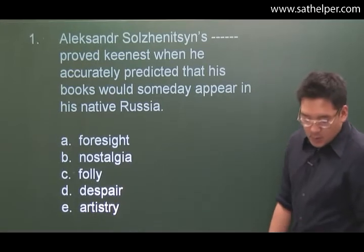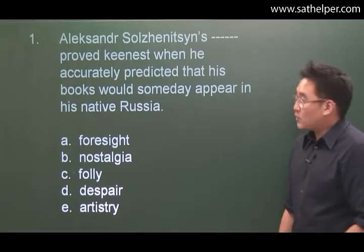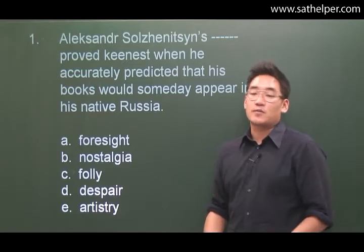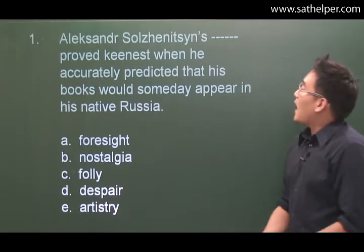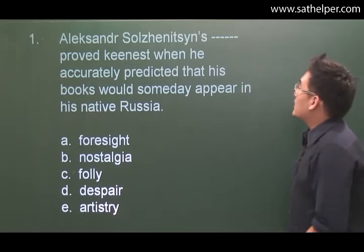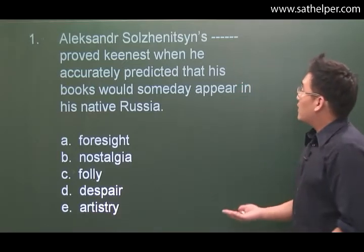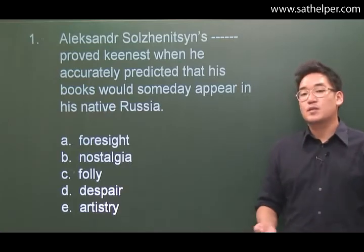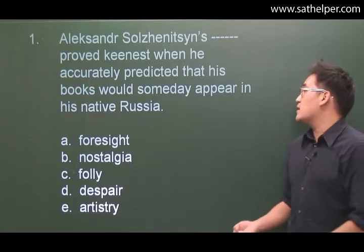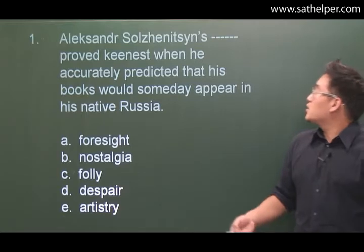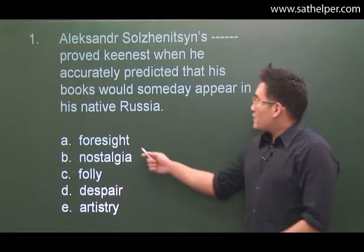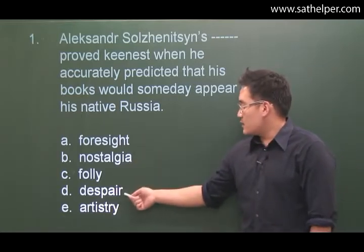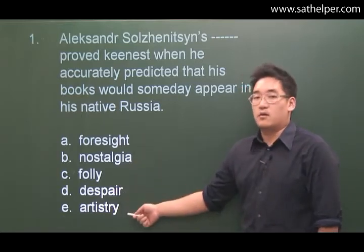If you've turned to page 390, we'll see that the first question is a sentence completion question. Number one says: Alexander Solzhenitsyn's blank proved keenest when he accurately predicted that his books would someday appear in his native Russia. The answer choices are: foresight, nostalgia, folly, despair, and artistry.